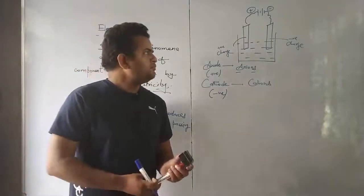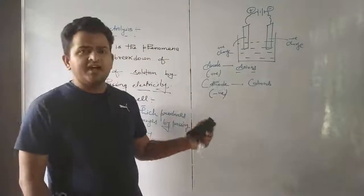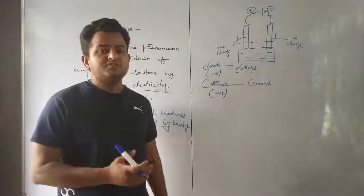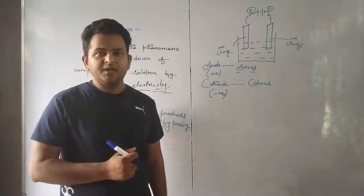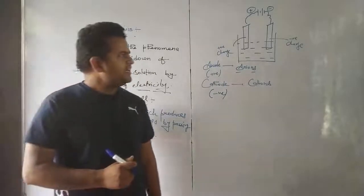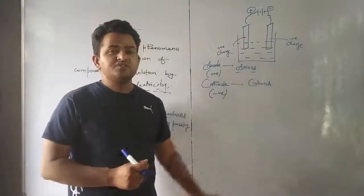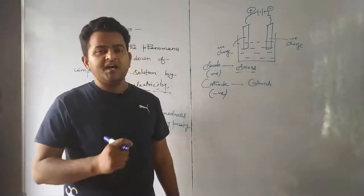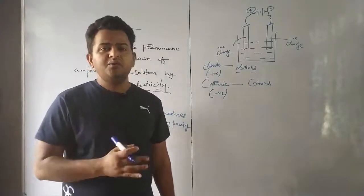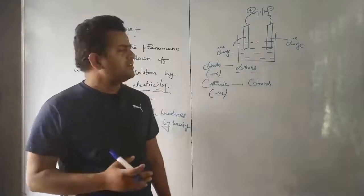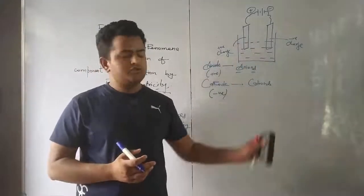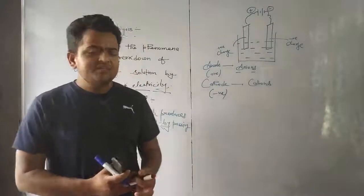Now we are talking about the electrolysis process — how much amount of substance is deposited and how it deposits. A scientist named Faraday studied the electrolytic process and told us that if we pass some amount of current, then we can determine the amount of substance that will be deposited on the electrodes.